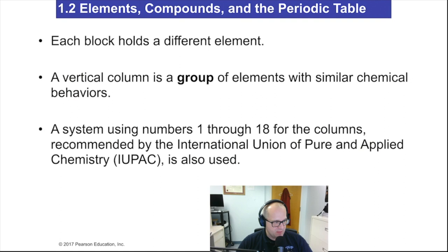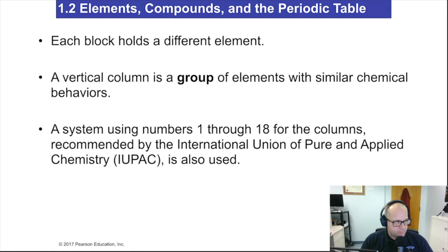Now each block holds a different element. The vertical column is a group of elements that have similar chemical properties. So if you were to look at group one, all those metals kind of behave the same. They all kind of do similar things. Not the same, similar.